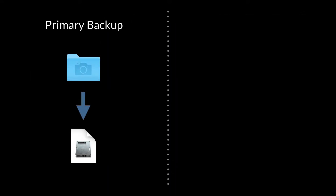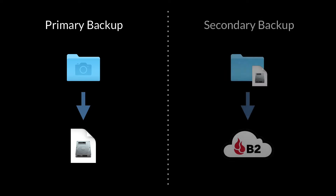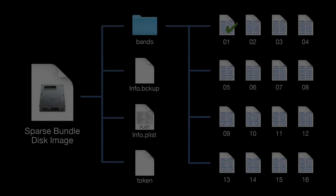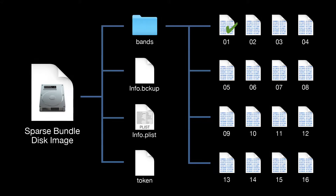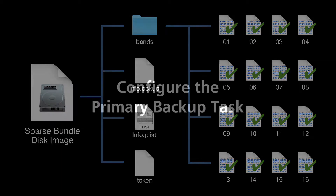Our strategy is going to involve first backing up to a sparse bundle and then backing up the disk image to the cloud. Uploading fewer equal-sized band files to the cloud will be much more efficient than uploading many more smaller files. This is important because a typical home folder will contain tens of thousands of files, most of them relatively small in size.